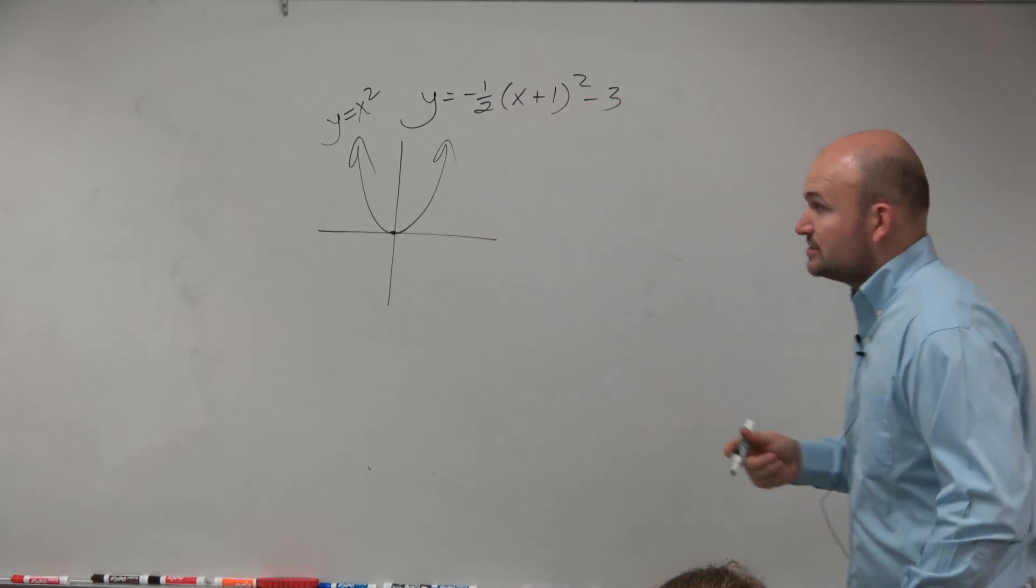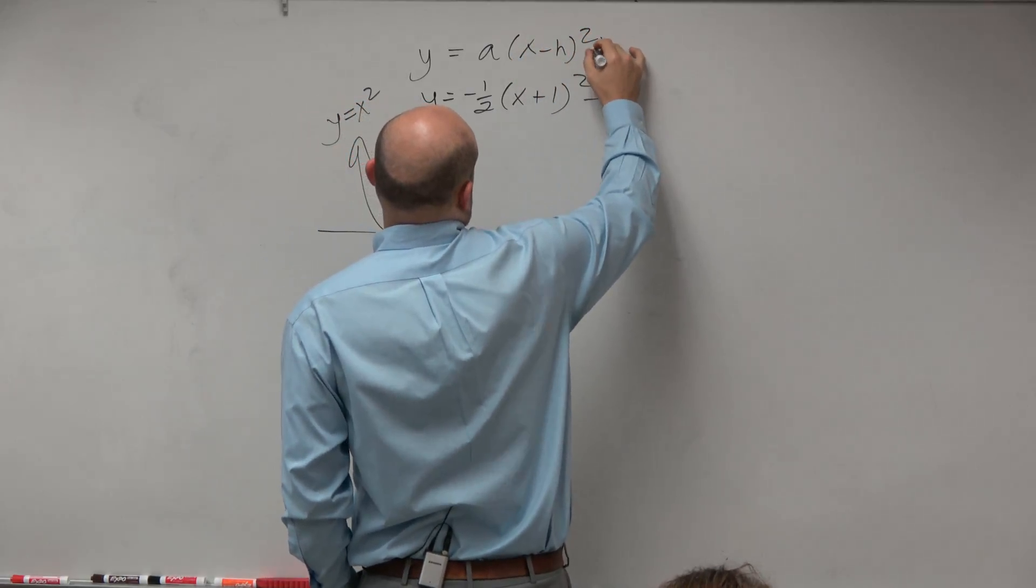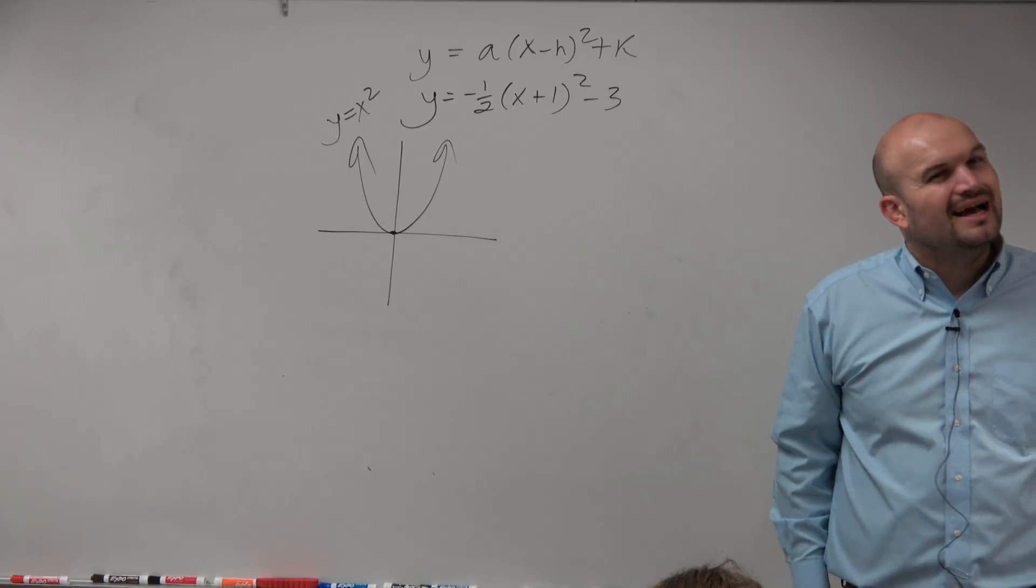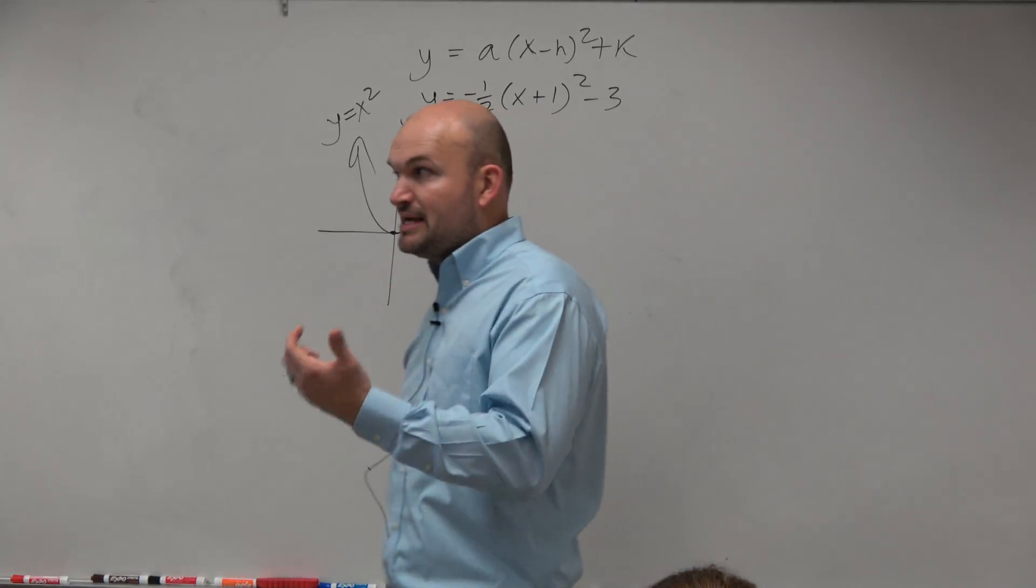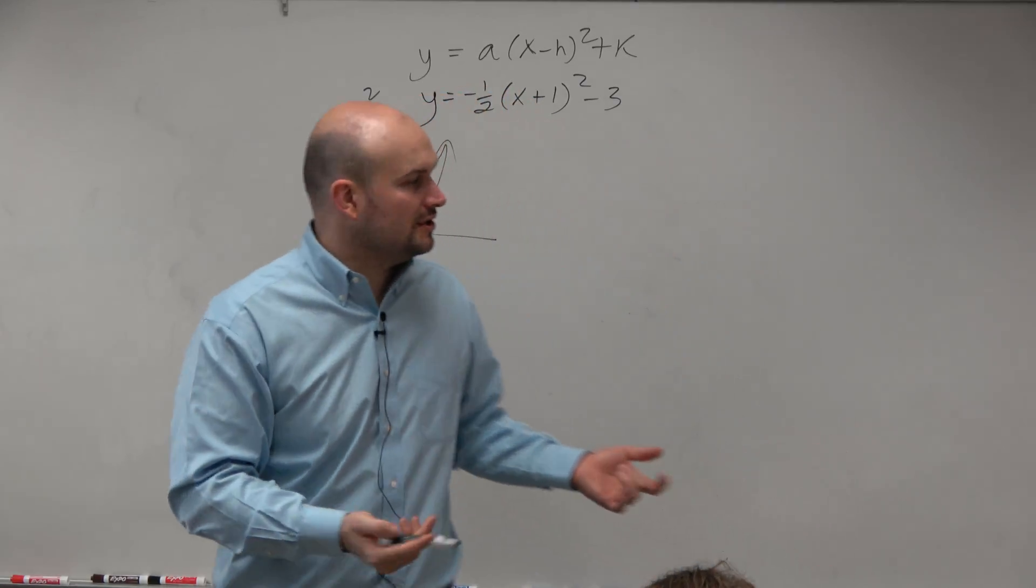The next thing we should know, which is something we have also covered, is the parent form or a vertex form of a quadratic. And we need to remember what these transformations do. Because should the graph open up or should it open down? What does everything look like?